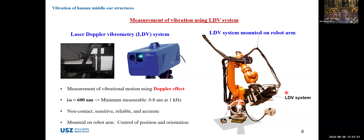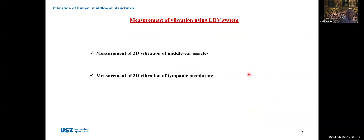For easy control of the LDV system, we prepared a robot arm and mounted the LDV system to it for easy and accurate control of position. I would like to show two examples we performed to measure vibrational motion of the middle ear structures using the LDV system. The first is the measurement of 3D vibration of the middle ear ossicles. The second is the measurement of 3D vibration of the tympanic membrane. The key difference is that the middle ear ossicles can be considered rigid during vibration, but the tympanic membrane is flexible and cannot be considered a rigid body.